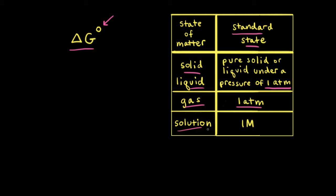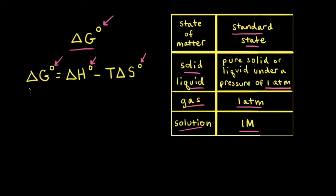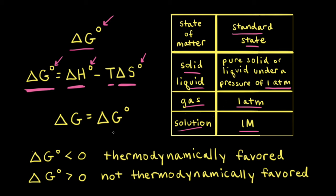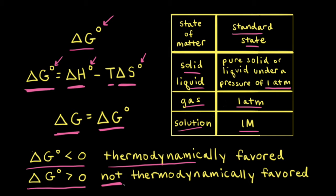If our substances are in the standard state, we can add a superscript to the equation. So we can calculate delta G naught, the standard change in free energy, by taking the standard change in enthalpy and subtracting the absolute temperature in Kelvin times the standard change in entropy. When substances are in their standard states, delta G naught equals delta G. Therefore, if delta G naught is less than zero, the reaction is thermodynamically favored in the forward direction, and if delta G naught is greater than zero, the reaction is not thermodynamically favored in the forward direction.